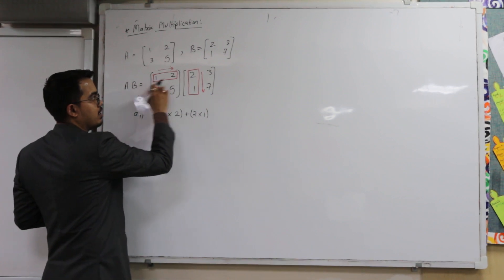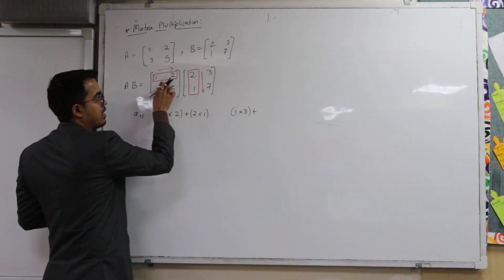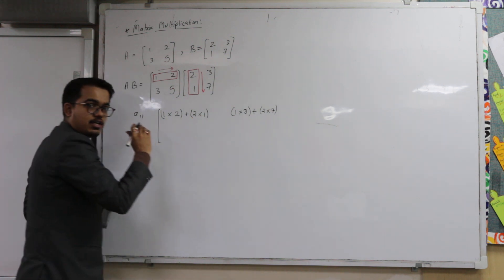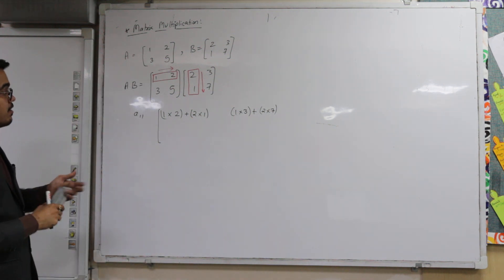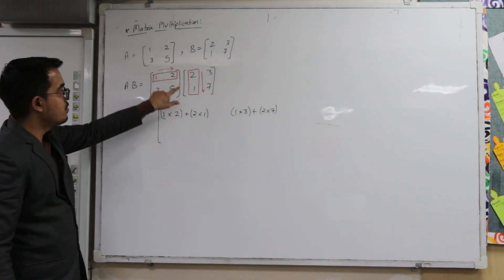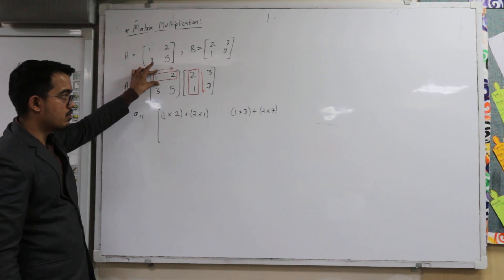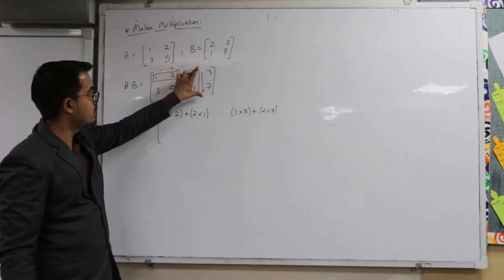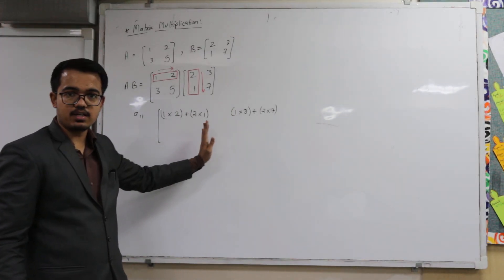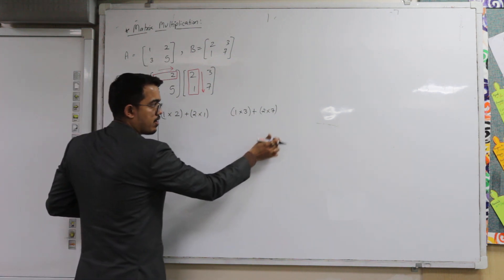If I keep the row the same and move to the next column, my second element A12 is generated. So again I will multiply 1 with 3 and add, then multiply 2 with 7. When I was using the first row, my answer was written in the first row. When I was using the first column, the answer went in the first column; when I moved to the second column, the answer went in the second column. Similarly you will get all the columns in the answer matrix.